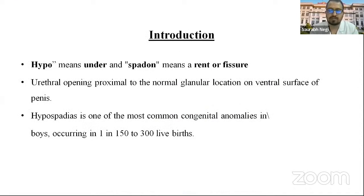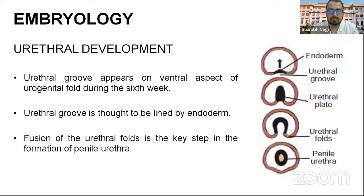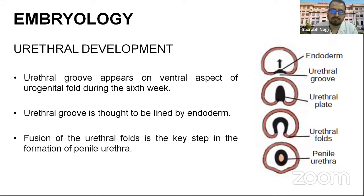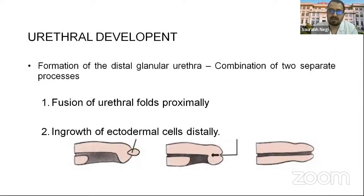Hypospadias is a urethral opening proximal to the normal glanular location on the ventral surface of the penis. 'Hypo' means under and 'spadon' means a rent or a fissure. Hypospadias is one of the most common congenital anomalies in boys, occurring 1 in 150 to 300 live births. Urethral development starts from the urethral groove appearing on the ventral aspect of the urogenital fold during the sixth week, thought to be lined by endoderm. Fusion of the urethral fold is a key step in the formation of the penile urethra. Formation of the distal glanular urethra is a combination of two processes: number one, the fusion of the proximal urethral fold proximally, and number two, the in-growth of the ectodermal cells distally.